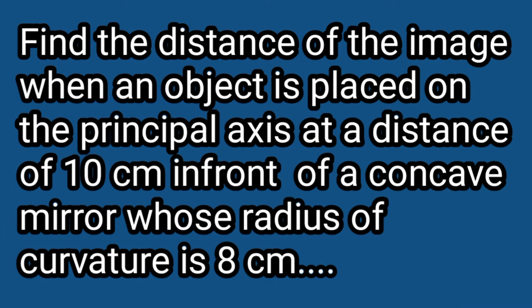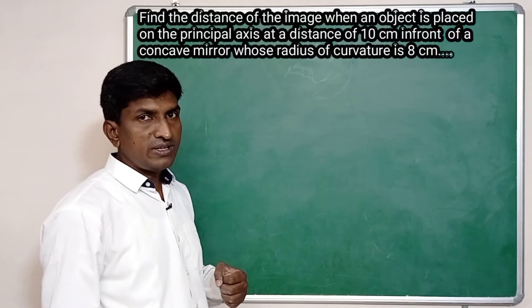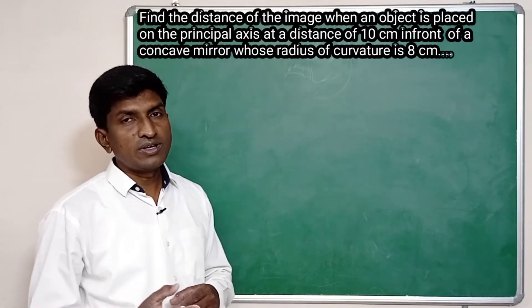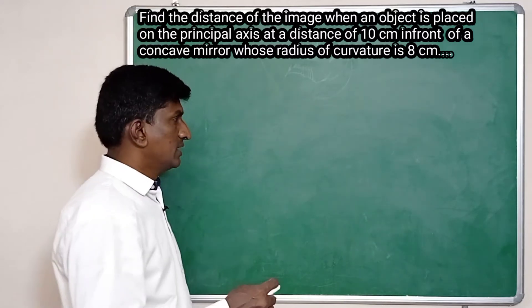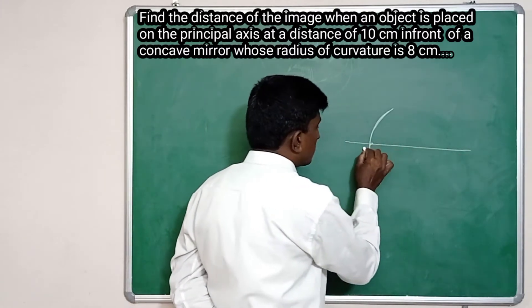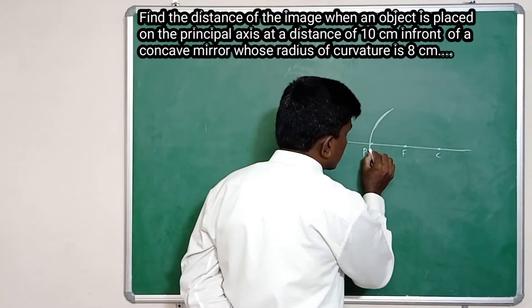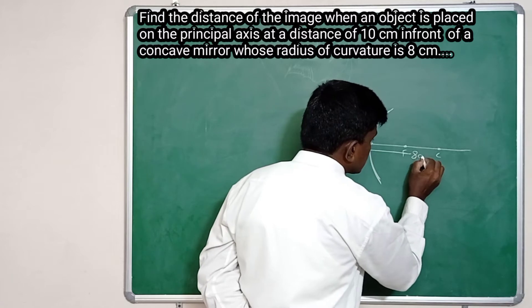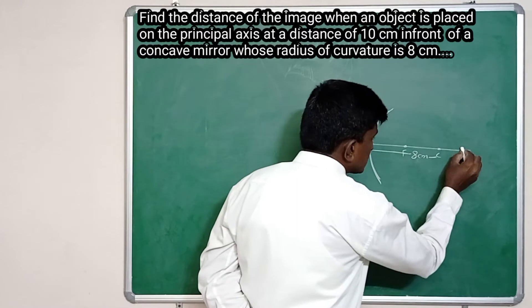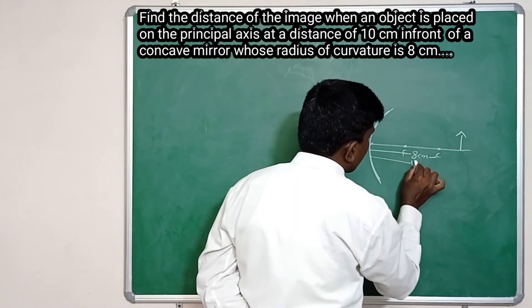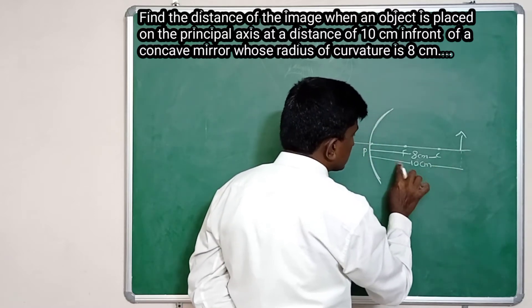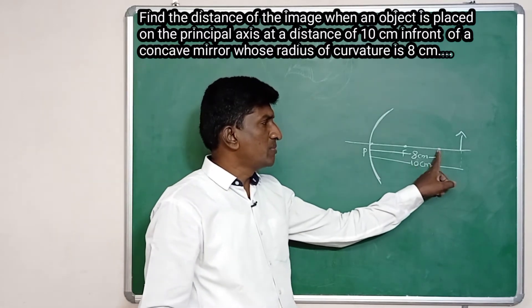Find the distance of the image when an object is placed on the principal axis at a distance of 10 centimeters in front of a concave mirror whose radius of curvature is 8 centimeters. The mirror is concave. Here is the pole, focus, and center of curvature. The distance of the center of curvature is 8 centimeters and the object distance is 10 centimeters, meaning the object is placed beyond C.